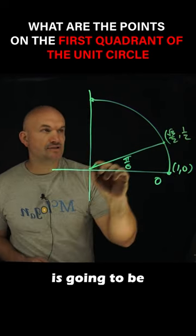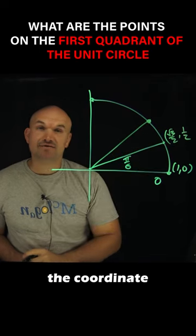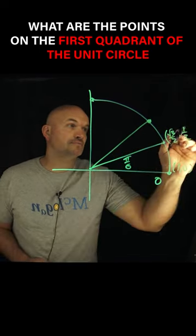The next angle is going to be π/4. That is going to have the coordinate point (√2/2, √2/2).